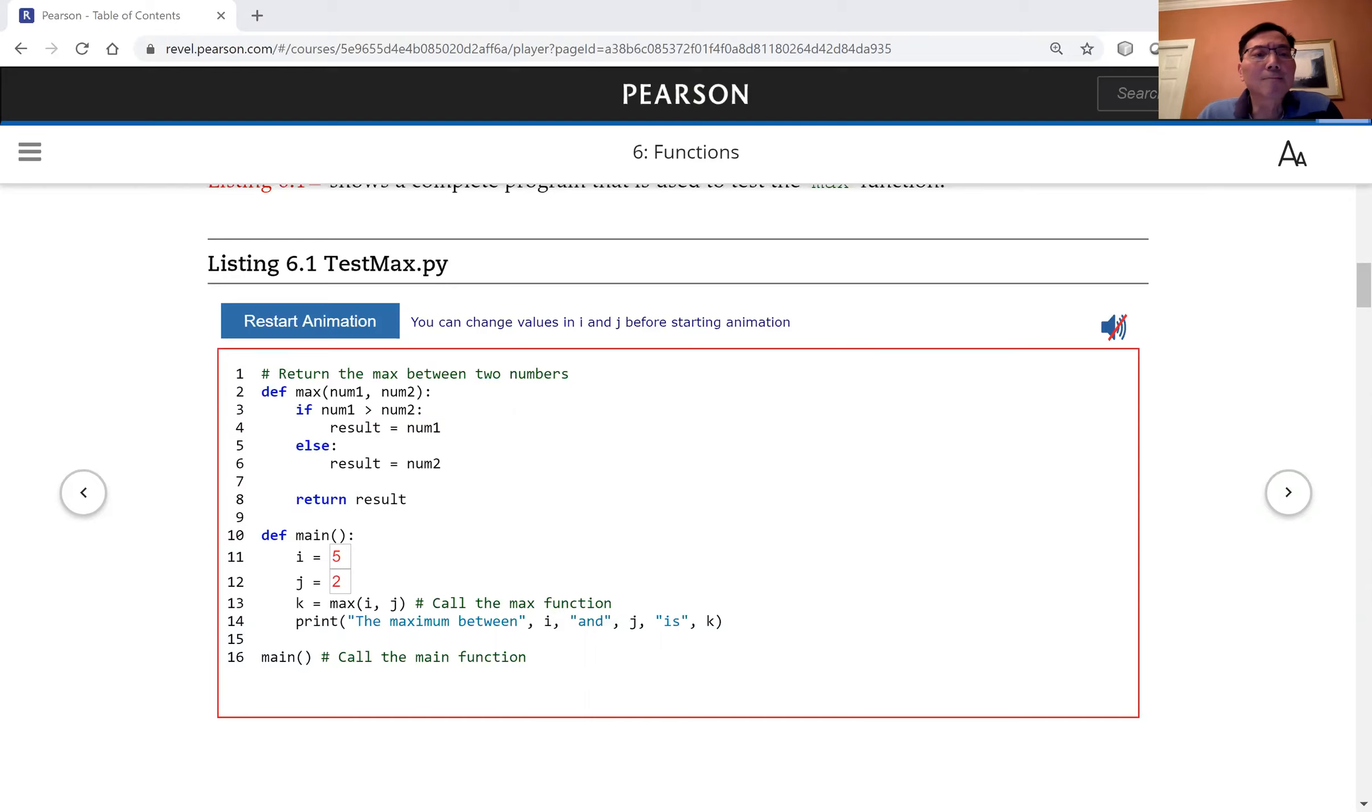I'm going to use this example, listing 6.1, to show how code animation demonstrates argument passing and invoking a function.